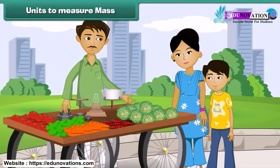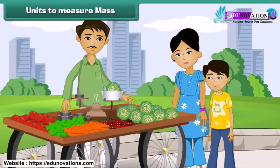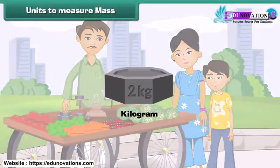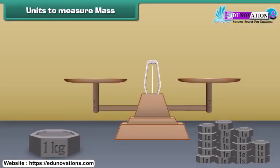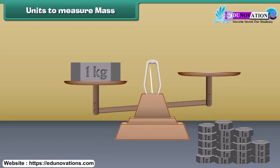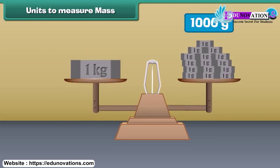You might have gone along with your mother for buying vegetables. You must have heard your mother asking for 1 kilogram cabbage, 5 kilogram potatoes, 100 grams green chili, etc. to the vegetable seller. Kilograms and grams are the two units used for measuring mass of substances, among which kilogram is the standard unit of mass. If one kilogram is divided into 1,000 parts, then one part is called a gram. This means one kilogram is equal to 1,000 grams.